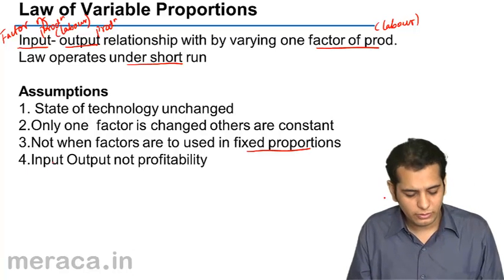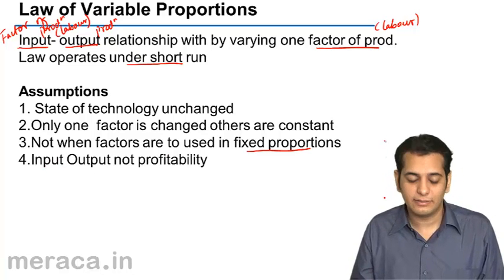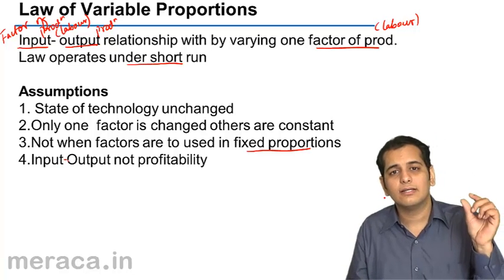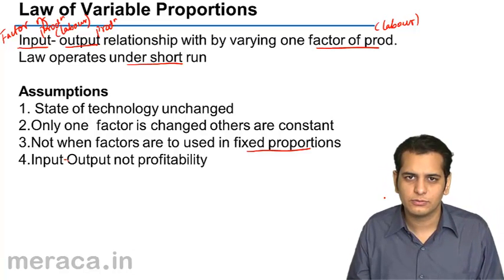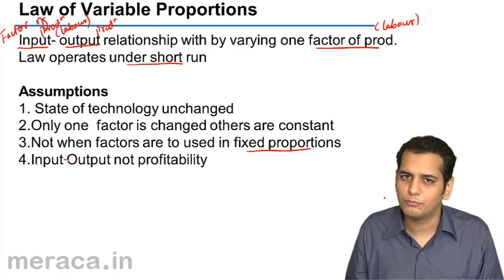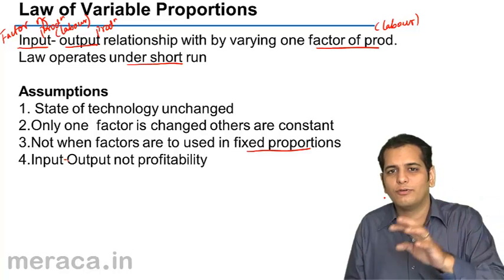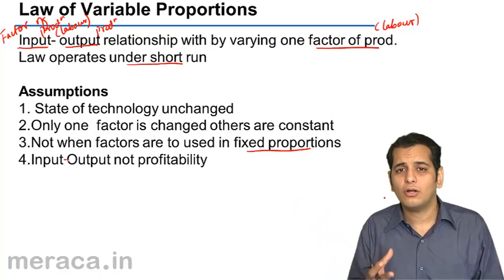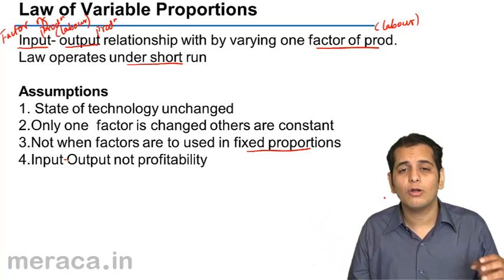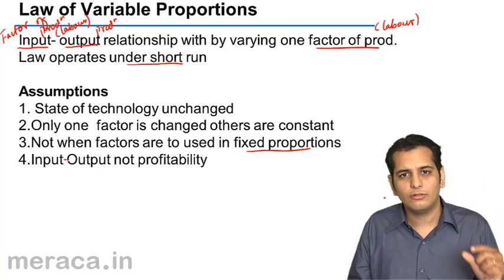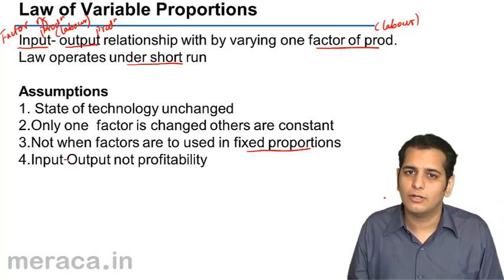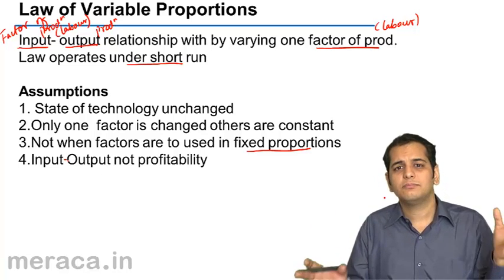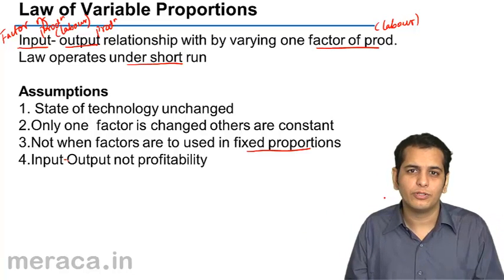The fourth assumption is input-output, not profitability. That is, we are concerned only with the quantities of inputs and outputs — only with the units of input and output, the amount of factors of production employed and the total product or total production — not with the profitability, not with the amount of profit that production will earn. We only want to understand the relation between inputs and outputs in terms of units, not in terms of money.